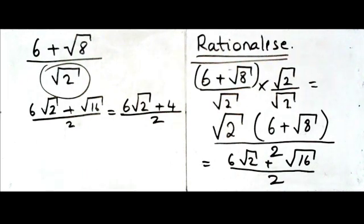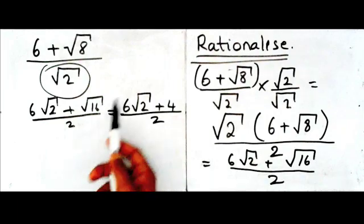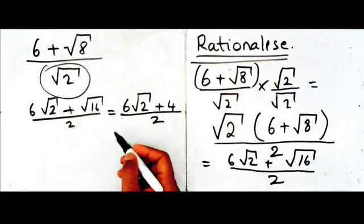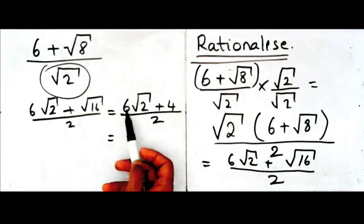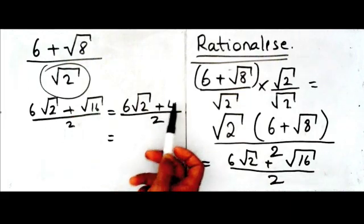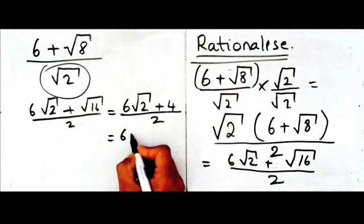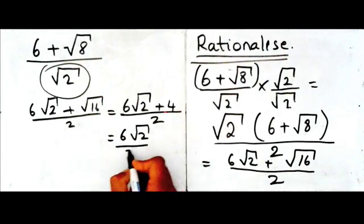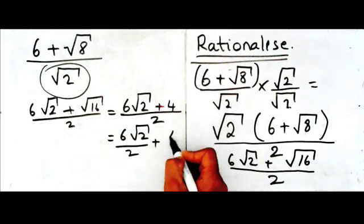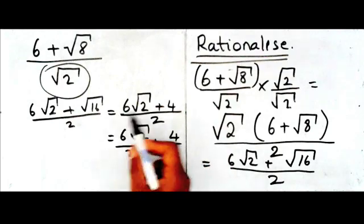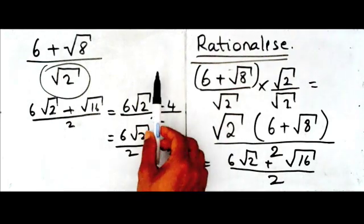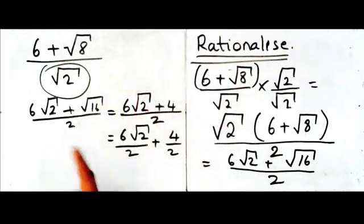Now, finally, I'm going to simplify this expression. And to simplify it, here I've got six root two over two plus four over two. So what I can do is just split it up and write it as six root two over two plus four over two. This is the same thing as that. The only difference is I just split it up here. And I've put that term over two and the four over two.